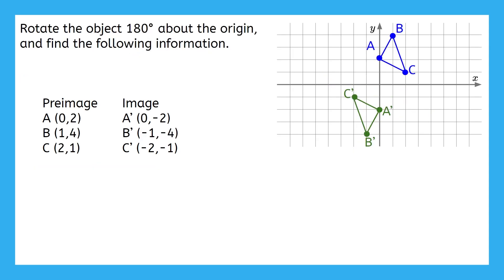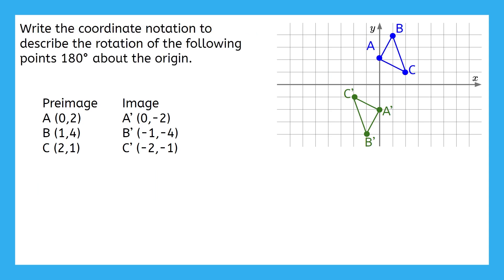Here's the second problem from our previous lesson. This time we have to find the coordinate notation for a 180 degree rotation about the origin, either clockwise or counterclockwise, since those would both take us to the same place. Let's start by writing the general notation we always use, then look for the pattern. This pattern might be kind of tough to find too, so pause the video here and give yourself some time to try it.